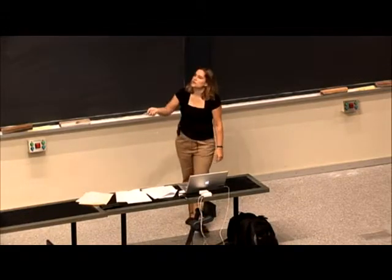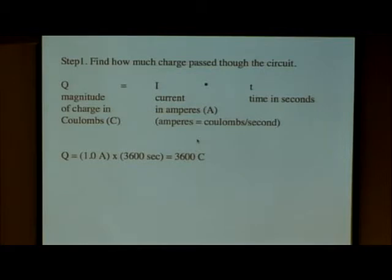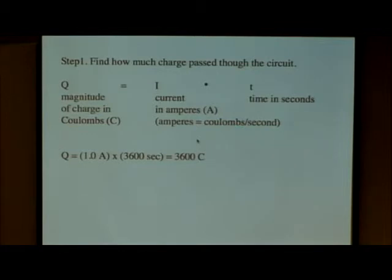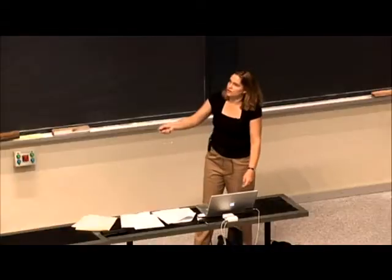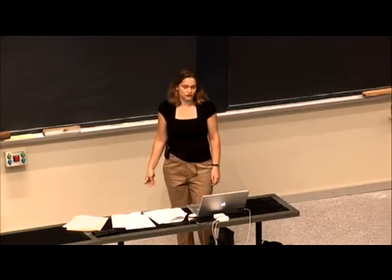We can calculate this out. We use this equation to find out how much charge is going to pass through the system. We have this term Q — the magnitude of charge — and it's in coulombs. That's equal to the current in amps, and just for unit conversion, amps are coulombs per second. So that's very convenient, because we're going to take the current times time. We had one amp and we had one hour, so we're going to have 3,600 coulombs as our magnitude of charge.